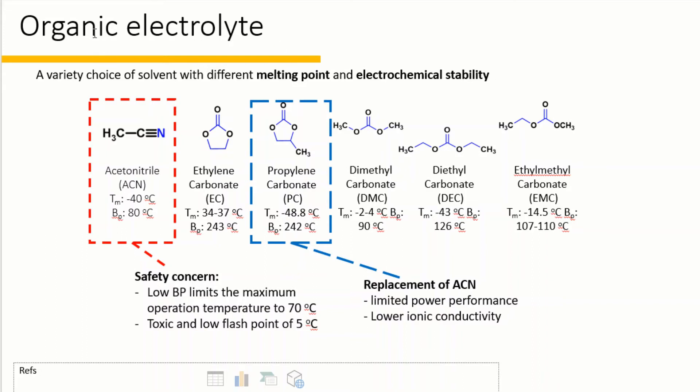On the other side, organic solvents with a variety of choices of melting points and electrochemical stability are more favorable for offering larger voltage windows and lower temperature operations. The most commonly used solvent is acetonitrile with TEA-BF4 as salt. The acetonitrile-based organic electrolyte can be operated with a voltage window of 2.7 V and temperatures down to negative 40 degrees C. But the low boiling point of acetonitrile limits the maximum operation temperature to 70 degrees C. Also, due to its toxicity and low flash point at 5 degrees C, there are safety concerns when using acetonitrile as solvent.